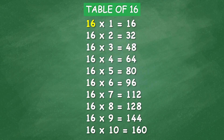Table of 16: 16 times 1 equals 16, 16 times 2 equals 32, 16 times 3 equals 48, 16 times 4 equals 64, 16 times 5 equals 80, 16 times 6 equals 96, 16 times 7 equals 112, 16 times 8 equals 128, 16 times 9 equals 144, 16 times 10 equals 160.